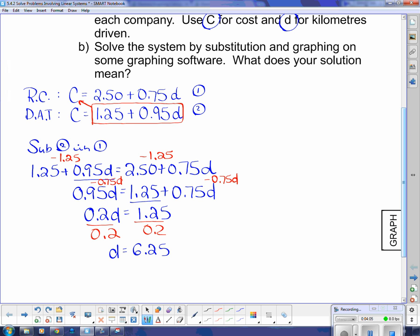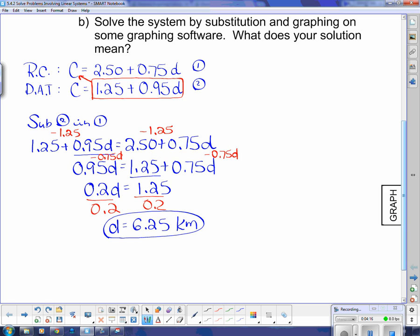And remember that 6.25 is kilometers because it says it's d. And now I have to figure out what the cost is for 6.25 kilometers. To figure out the cost for 6.25 kilometers, I take my d and I say sub d back into equation one. So that says c equals 2.50 plus 0.75 times the number of kilometers, 6.25. And that gives me $2.50 plus 0.75 times 6.25. It gives me $7.18 when I round it.